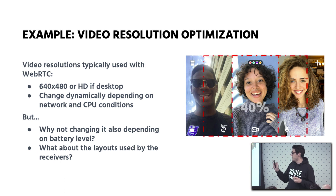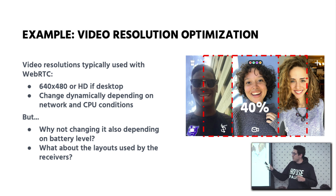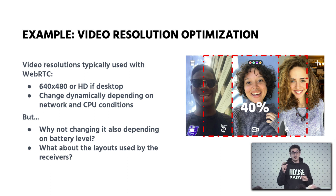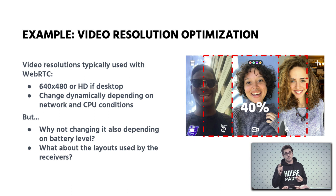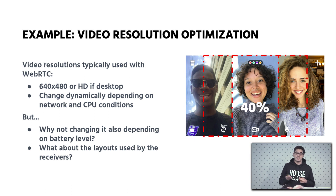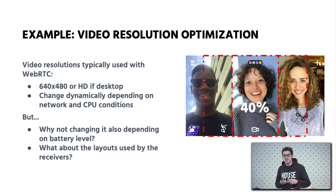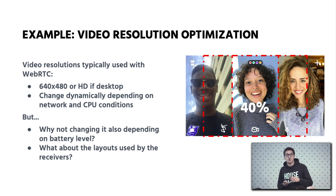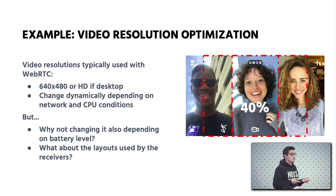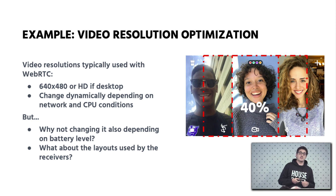This is what happens: we are sending a frame at 640 by 480, but actually what is rendered on screen is only 40% of the pixels. So we are wasting 60% of bandwidth, CPU processing, and encoding, and providing a worse experience than what we could.